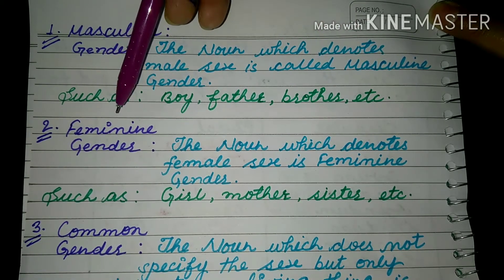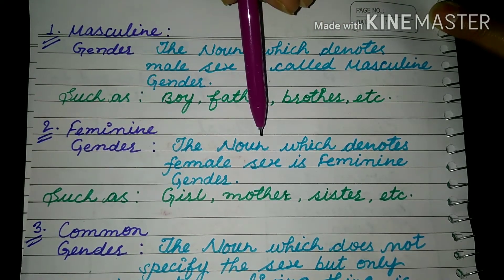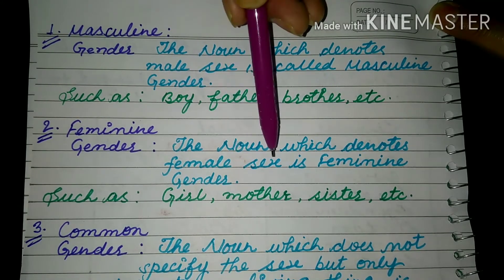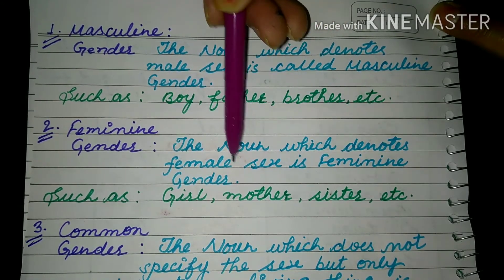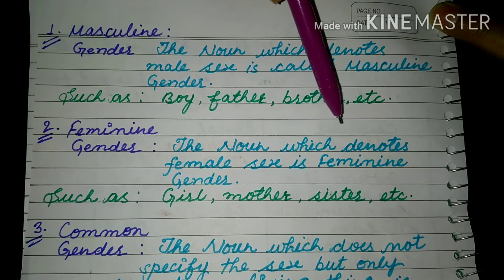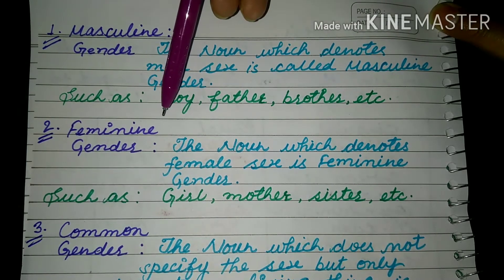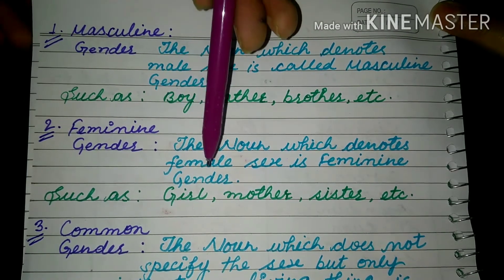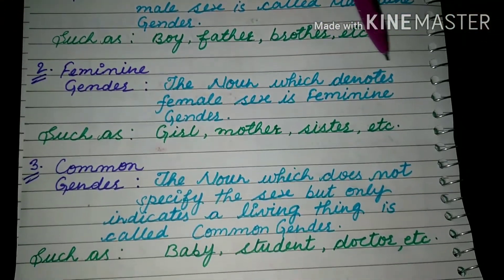Another is feminine gender — the noun which denotes female sex is called feminine gender. Nouns that tell about females are feminine gender. For example: girl, mother, sister, etc.